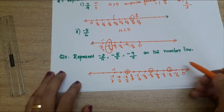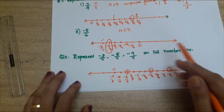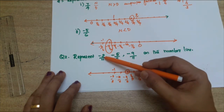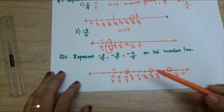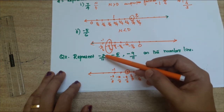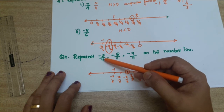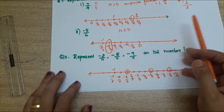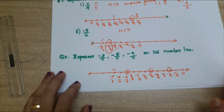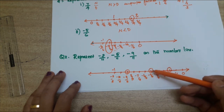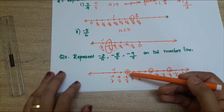This is the simple method: first draw a number line and check if it is positive or negative — if negative, go to the left side; if positive, go to the right side. Then compare numerator and denominator: if the denominator is bigger, you can directly mark the fraction. If the numerator is bigger, convert to a mixed fraction first to find where the point will come. That is minus 2 by 11, minus 5 by 11, and minus 9 by 11 — got it!